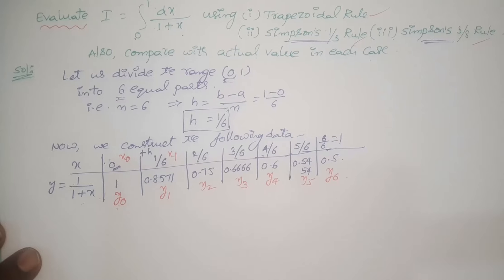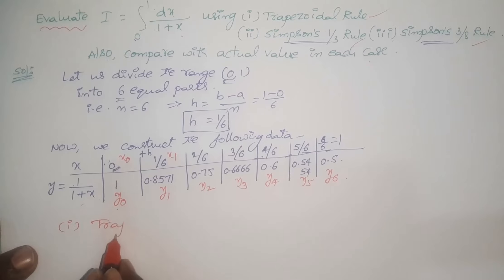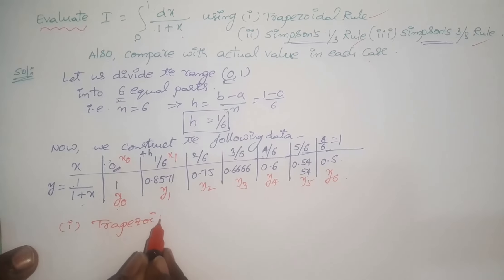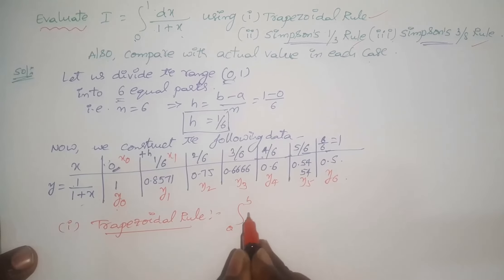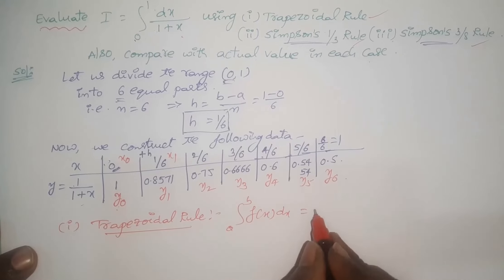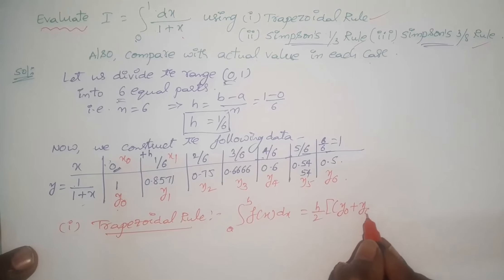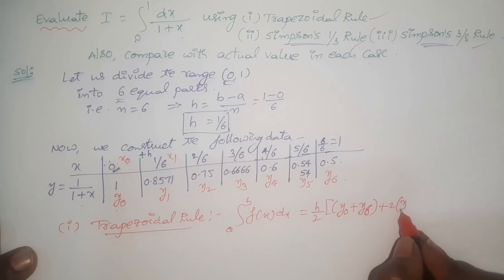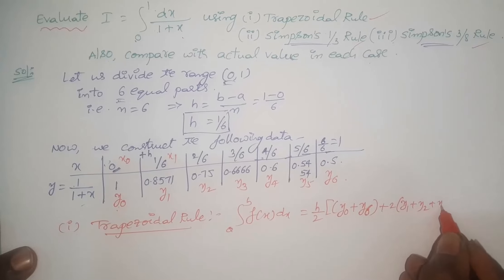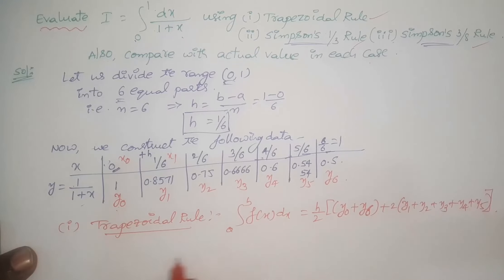Now we are going to apply the Trapezoidal rule. According to the Trapezoidal rule, the formula for the definite integral from A to B of f(x) dx equals h by 2, multiplied by the sum of first and last ordinates y0 plus y6, plus 2 into the sum of all remaining ordinates y1 plus y2 plus y3 plus y4 plus y5. Replace all these values to get the value of the definite integral.